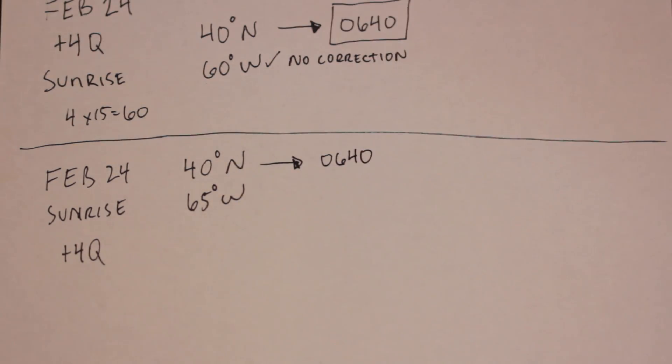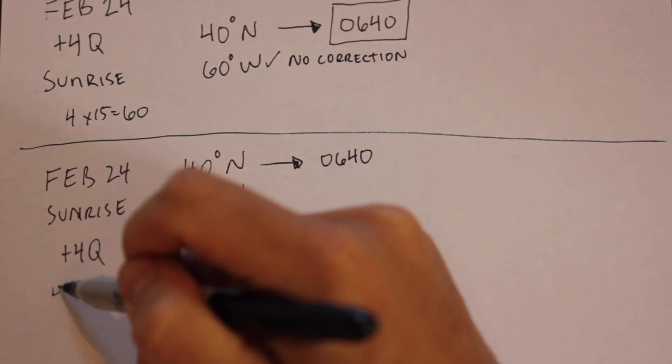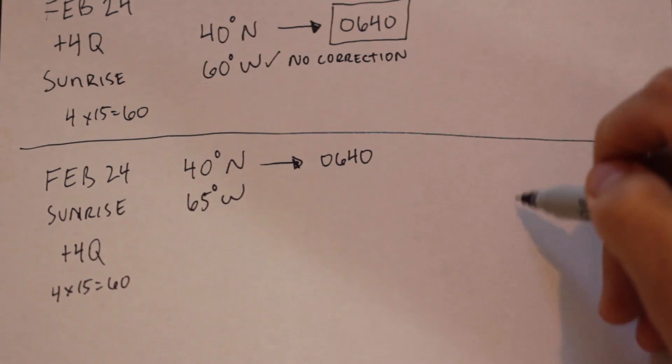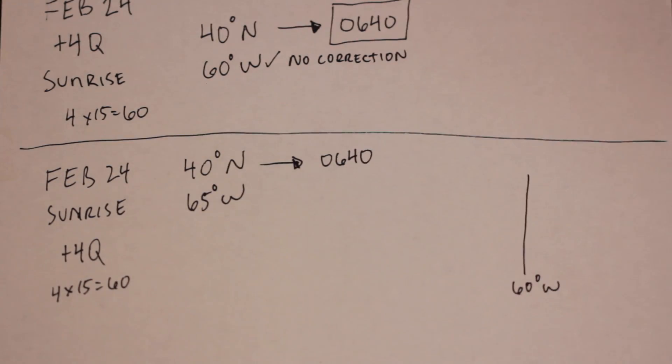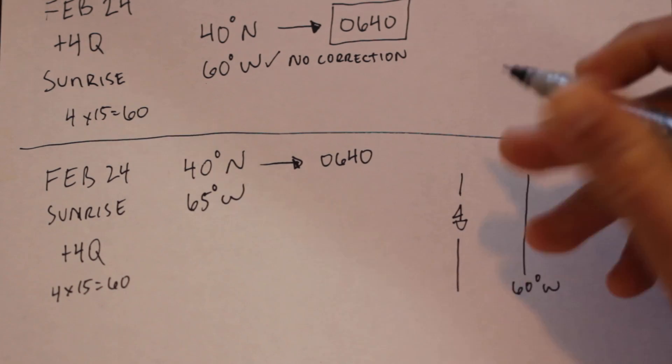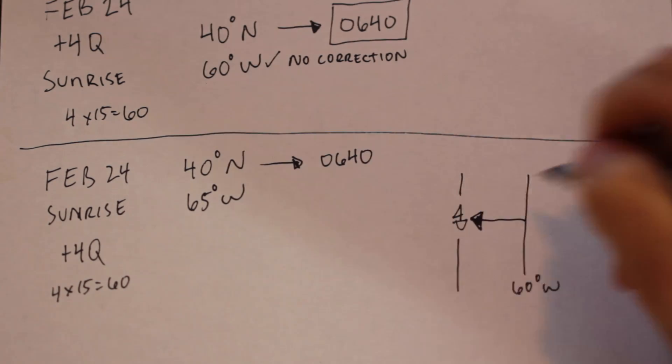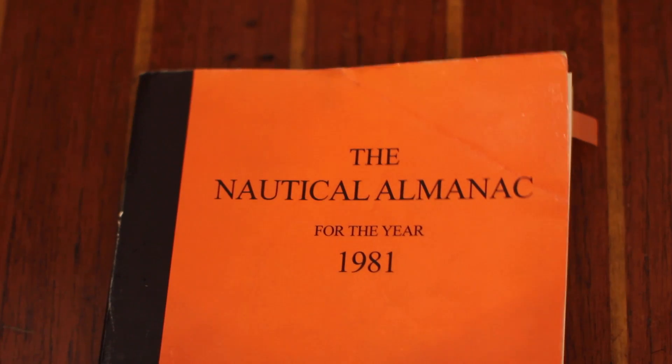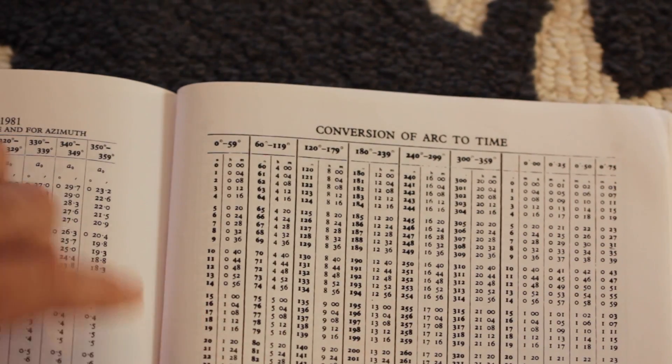This time, we are not located at a standard meridian. Remember, plus 4 corresponds to 60 degrees west. We are at 65 degrees west, which is 5 degrees to the west of the meridian we are observing on our watches. In the Nautical Almanac, towards the back, we can use the conversion of arc to timetable to do exactly that.